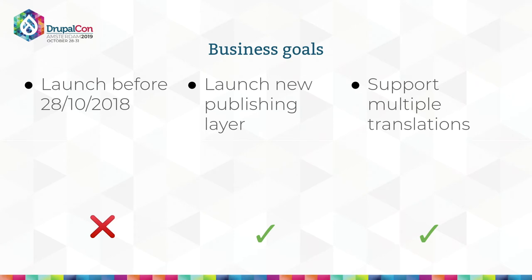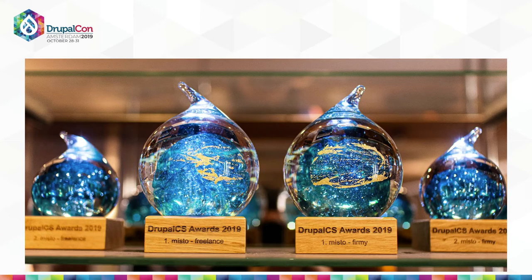So for these three business goals: the first one we weren't able to achieve, unfortunately, but at least there was the magazine which they are really happy about. We were able to launch the new publishing layer — the community stepped up and helped us. And we were able to achieve multiple translations, which in the beginning seemed easy but turned out to be the hardest task of all. After we launched the project, we had very mixed feelings and the client had mixed feelings too, but now looking back at this project we are quite happy about it.